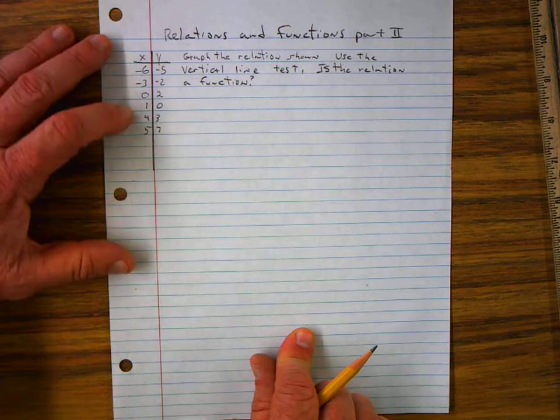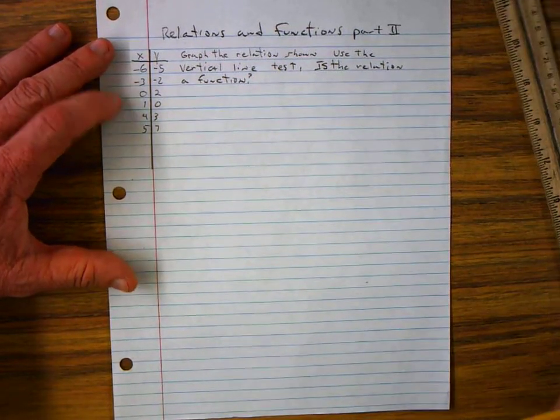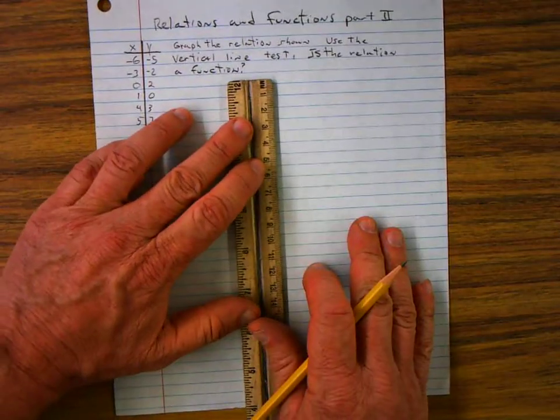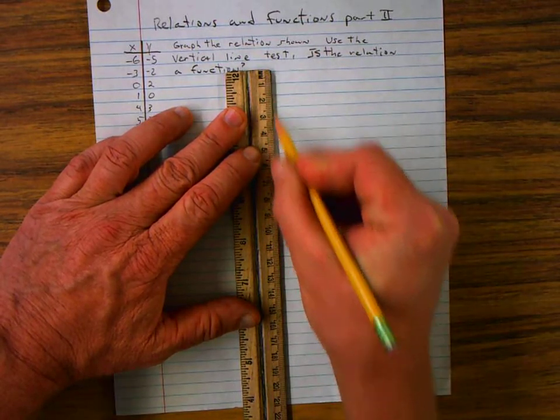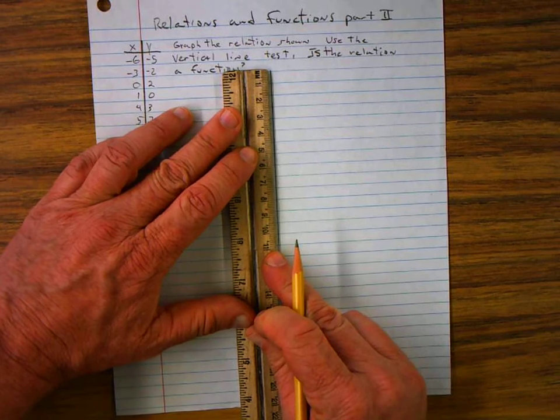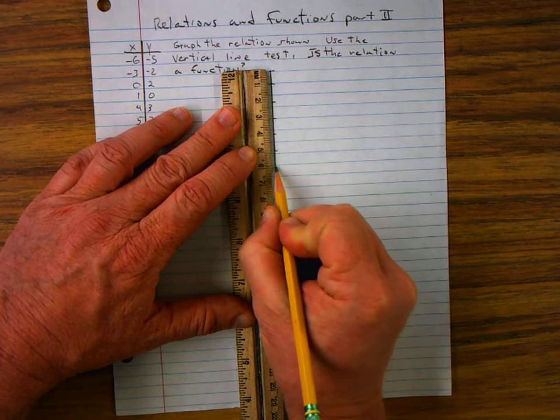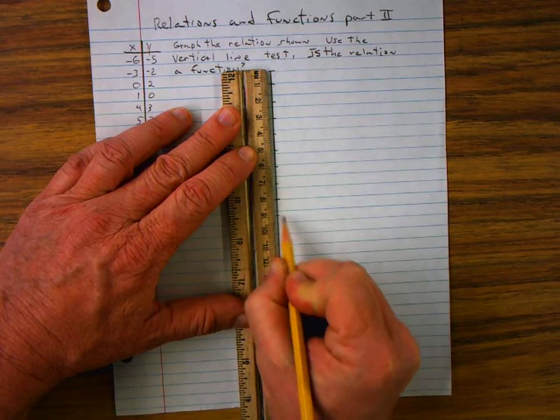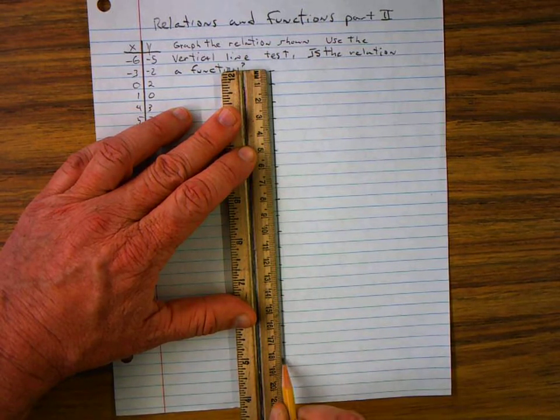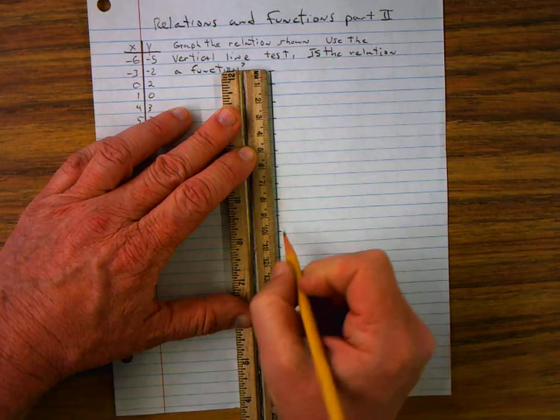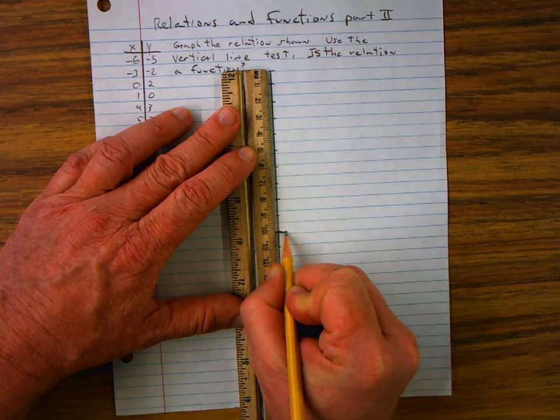So we have a set of ordered pairs here and the first thing I have to do is create a coordinate plane. So I'm going to lay my metric ruler down here and I'm going to draw a line approximately 20 centimeters long. And along that line I'm going to mark it every centimeter. And at about the 10 centimeter point I'm going to make an extra long line.